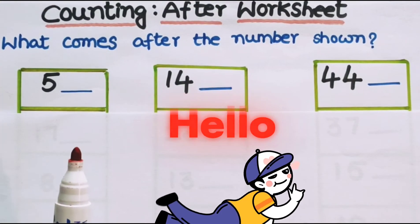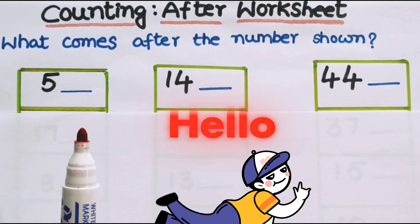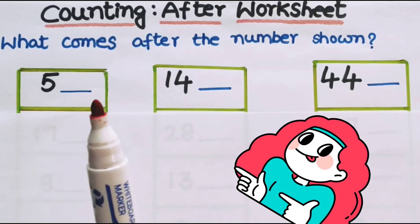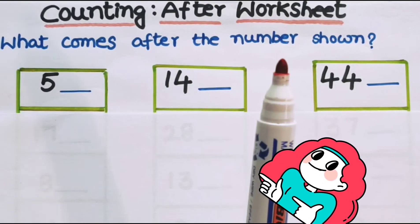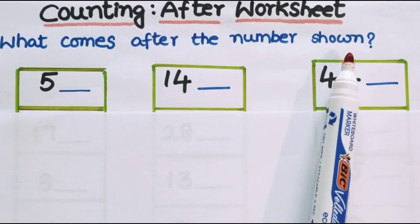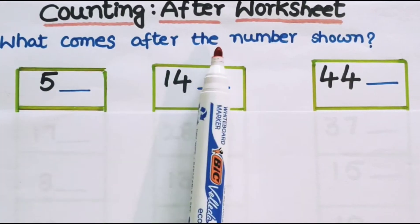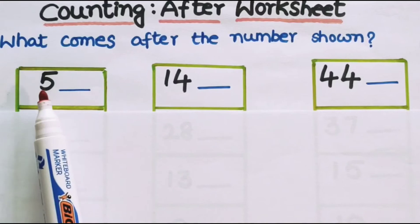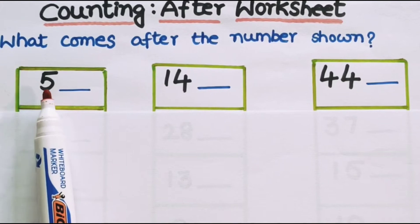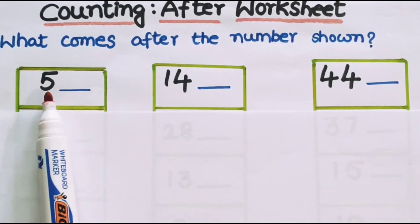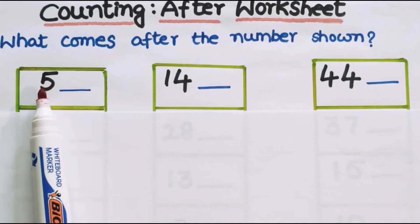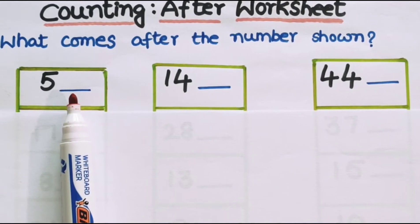Hello everyone and dear children, once again welcome back to the teaching and learning channel. Today in this video we are practicing counting numbers. We are doing a worksheet about counting after numbers. The question is: what number comes after the number shown? We have different groups of numbers, and in each group we have a number with a blank after it. We have to write the numbers which come after the given numbers. Shall we start this worksheet? Yes, let us start.